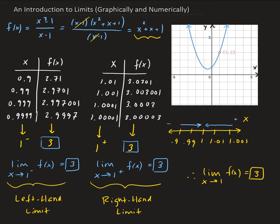One important observation: the limit exists here, but the function value at x equals 1 does not exist. The limit can exist, but the function value may not exist at that point — we always have to keep this in mind. We can clearly see that at x equals 1 we get a hole, so f(1) for our original function does not exist, but the limit exists. This will be a very important part in defining the continuity of a function at a point later on.